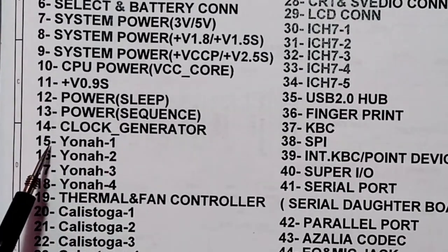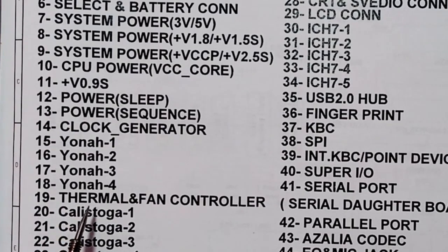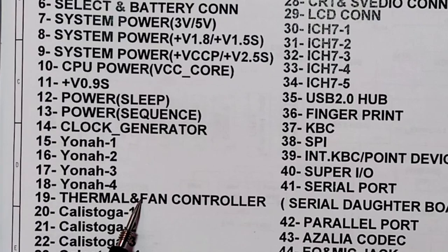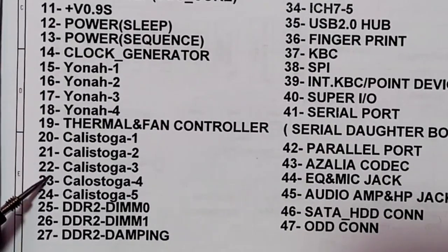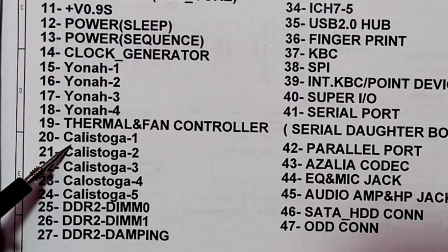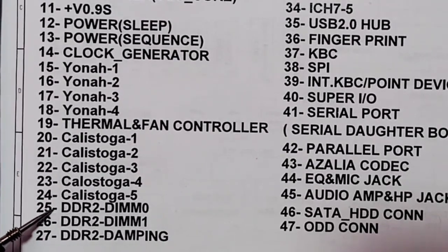In pages 15, 16, 17, and 18 we have the CPU or central processing unit. In page 19 we have the thermal and fan controller — an IC that controls fan speed in accordance with the CPU heat; when CPU temperature increases the fan speed increases and vice versa. The Calistoga chipset is the north bridge, existing in pages 20 through 24, and the DDR slots follow in subsequent pages.